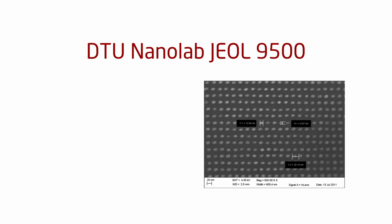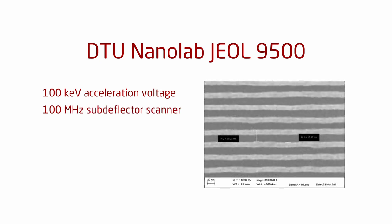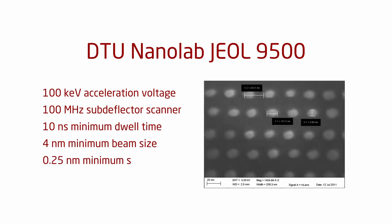The JEOL 9500 system at DTU NanoLab is equipped with a 100 kV electron source and a 100 MHz subdeflector scanner, allowing a minimum dwell time of 10 nanoseconds. Minimum beam size is about 4 nanometers and minimum shot pitch is 0.25 nanometers. The system is capable of producing features down to about 10 nanometers.